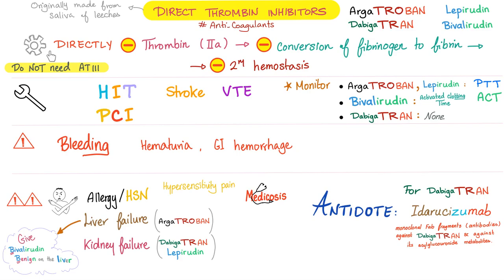Mechanism of action: they directly inhibit thrombin, which inhibits conversion of fibrinogen to fibrin. This inhibits secondary hemostasis — that's why they are anticoagulants. There is no need to activate antithrombin 3, unlike heparin, which had to stimulate antithrombin 3 first.